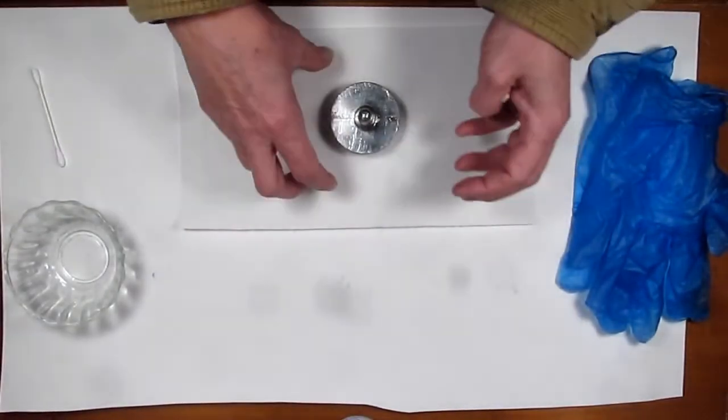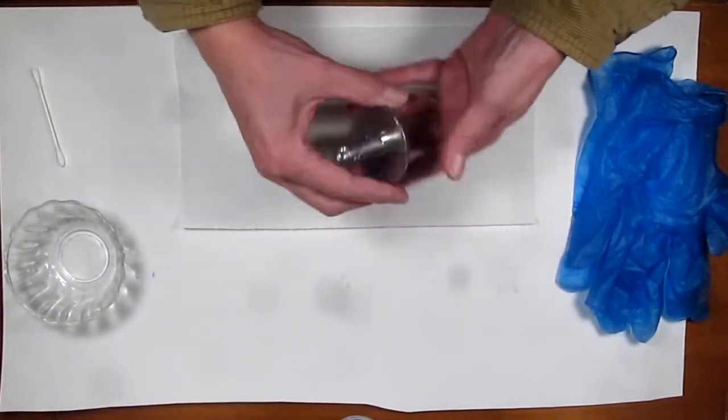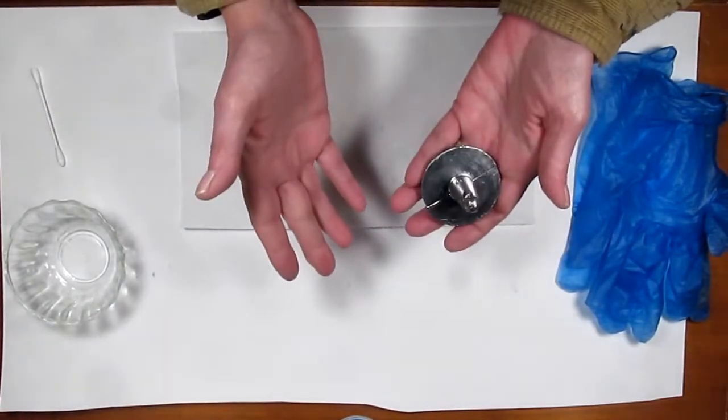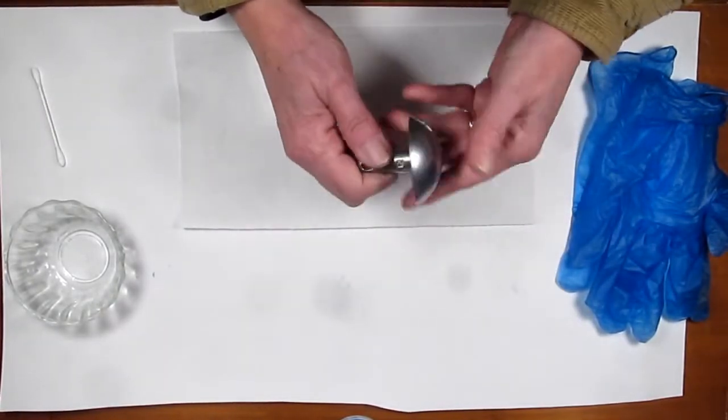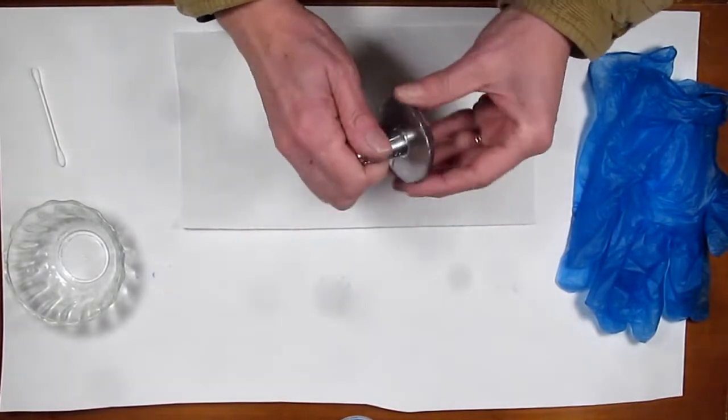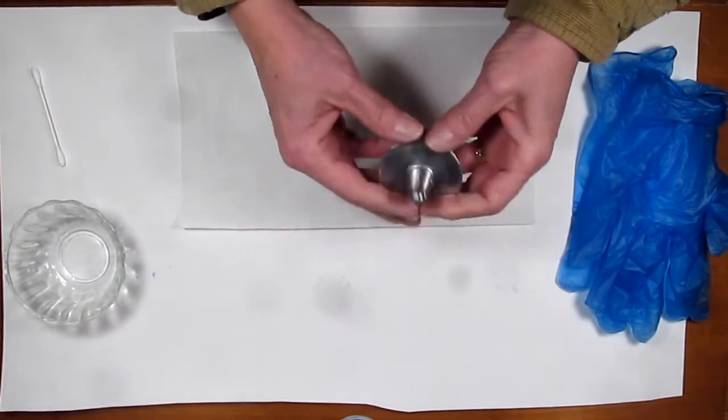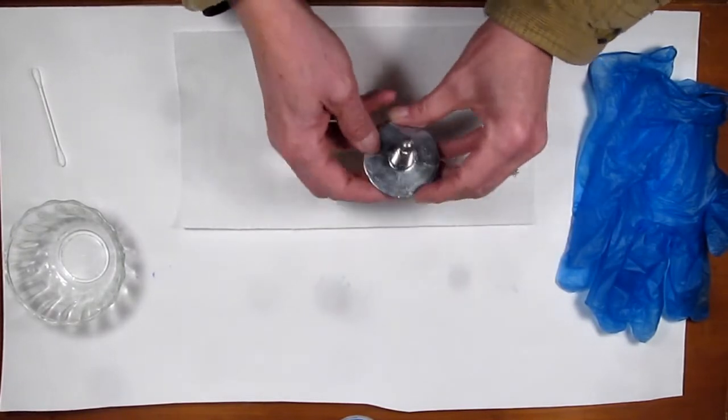So in this video I'm going to show you how you can take a brand new cast lead weight for a decoy and we're going to make this look like it's been hunted over for years. We're going to add patina to it in a matter of seconds.